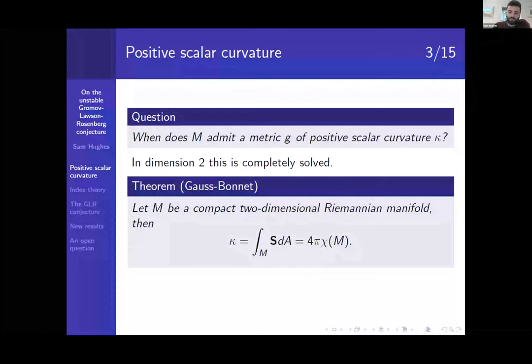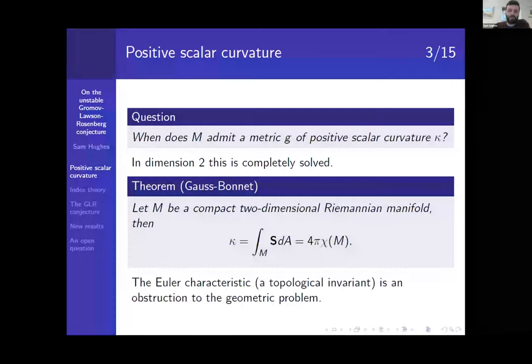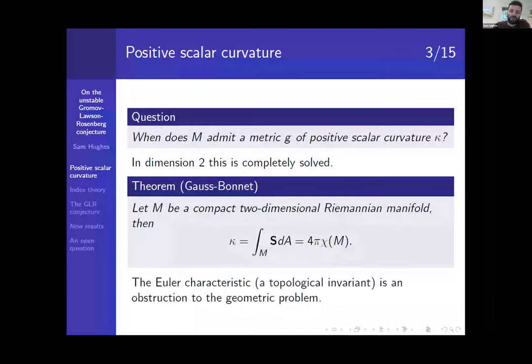And yet here, the obstruction to it lies very deeply rooted in topology. I mean, the Euler characteristic is an alternating count of cells. So this is quite a surprising fact. So here you can see immediately if it's a hyperbolic surface, so one of genus at least two, then this value is negative because the Euler characteristic is negative. And if you have a torus, then this value is zero. So again, you can't have positive scalar curvature. As we saw, the sphere does admit a metric of constant positive scalar curvature, and here that invariant becomes positive. So maybe we can try and generalize this idea of finding a topological obstruction to a geometric problem. And you might ask, what about higher dimensions?